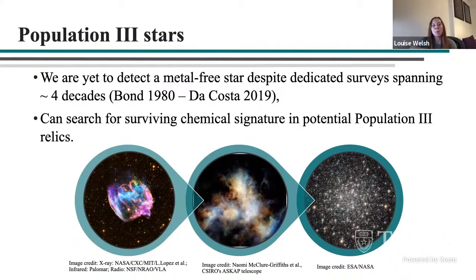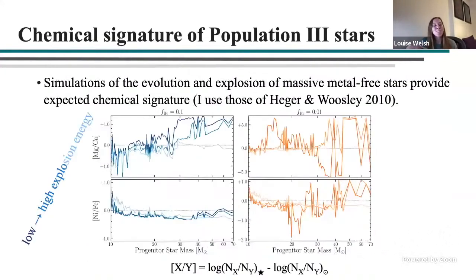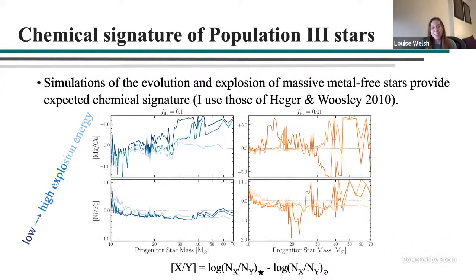In a sample of metal-poor Milky Way halo stars, we have to understand the expected chemistry of these massive metal-free stars. We can look to simulations of the evolution and explosion of massive metal-free stars to get an idea of the chemical yields. I've been using the simulations from Heger and Woosley performed in 2010, which calculate the yields of Population III supernovae as a function of progenitor star mass.